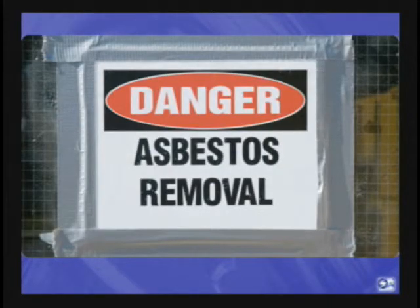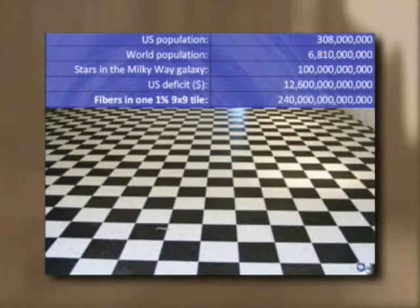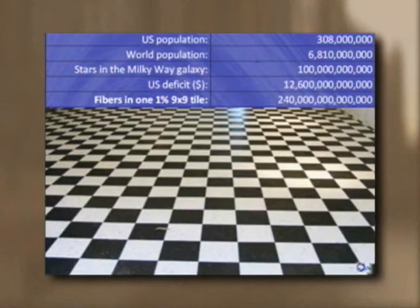In summary, asbestos can be found in a myriad of building materials, auto brakes, contamination in consumer products, our water, our air, and even our food. We should also consider potential secondhand exposures in dust and air from building abatement, renovation and demolition, as well as exposure from naturally occurring asbestos. The numbers are staggering: one nine-by-nine school tile containing 1% chrysotile asbestos with average-sized fibers would have over 240 trillion individual fibers. To put that in perspective, the population of the U.S. is only 308 million, there are only 100 billion stars in the Milky Way galaxy, and the national deficit is a paltry $12.6 trillion.